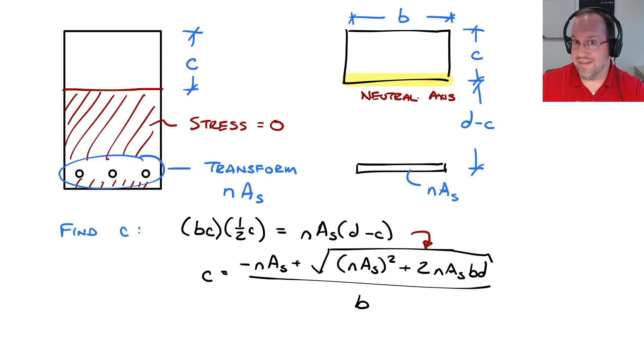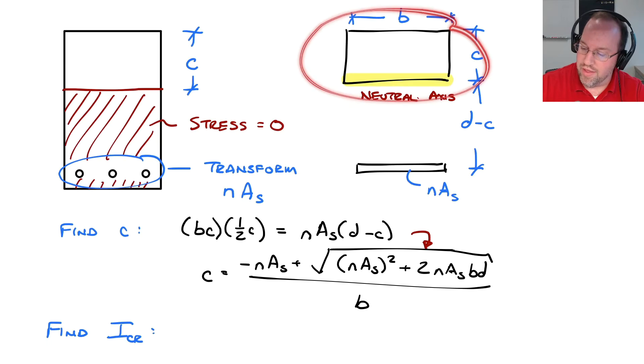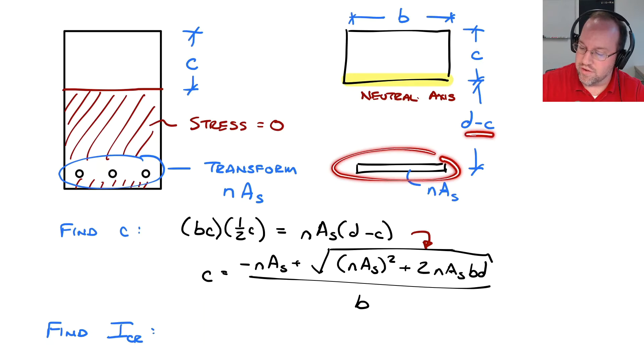Now that I have my depth to neutral axis, i.e. my extent of cracking, I can find my cracked moment of inertia I sub CR. Now, there's two regions for this. There is a rectangle, and then there is an area down here that's a distance D minus C away from my centroid. And so if I calculate I cracked, we have two separate areas.